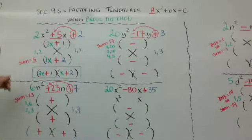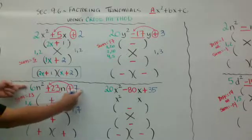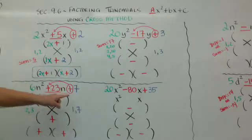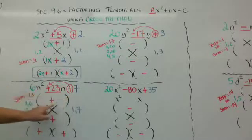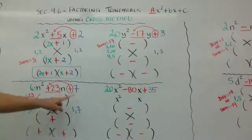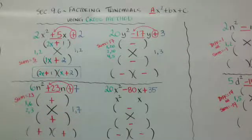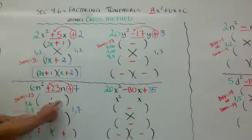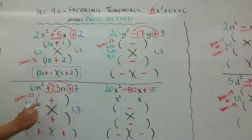Here's another example. I have 6n squared plus 23n plus 7. Because it's a plus, I know my signs are going to be the same, so I'm going to put plus plus. I put my factors of 7 here and list them out. My factors of 6 are 1 and 6, and 2 and 3. I need a sum when I multiply and add my crosses to be 23.